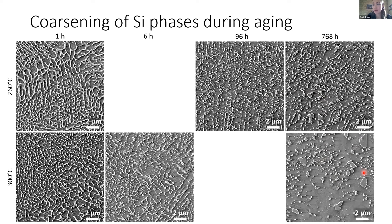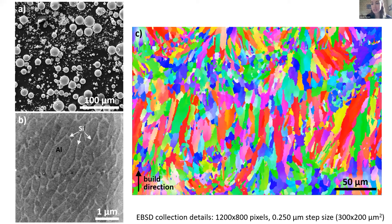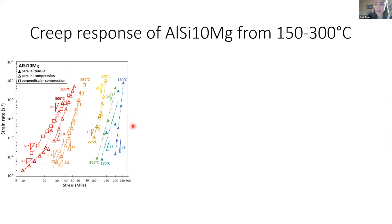When we look at how the material is coarsening, the initial cellular structure starts to break down — after one hour it's still intact, but it breaks up into individual particles after six hours, and after 96 hours and almost 800 hours at 300°C, the cellular network is just unrecognizable. We have these huge clumps of silicon phases that have balled up from their initial network structure. We do the creep test at 260°C and 300°C. The main mechanism in creep is grain boundary sliding — more grains means more grain boundaries, more pathways for grains to slide past each other, which is worse for creep. If you want really good creep resistance, you want really big grains.